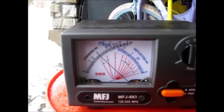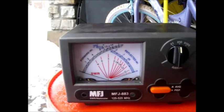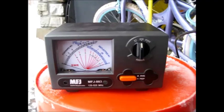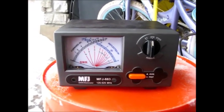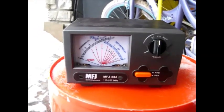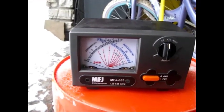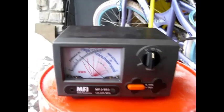So the advantage here for a bug out bag is if you're at a location where coverage is a little bit scratchy, you can pull out this field expedient coax antenna and string it up in a tree and you will greatly improve your radio's performance, reception, and range by doing this.